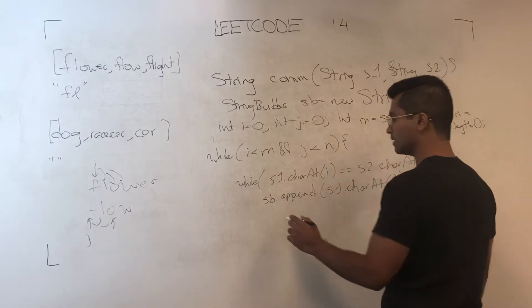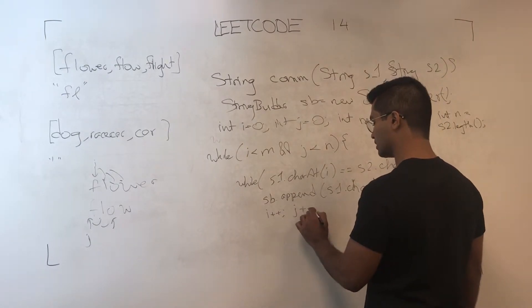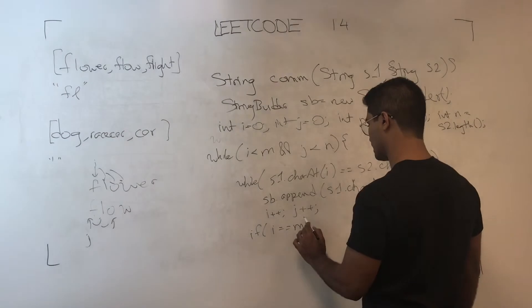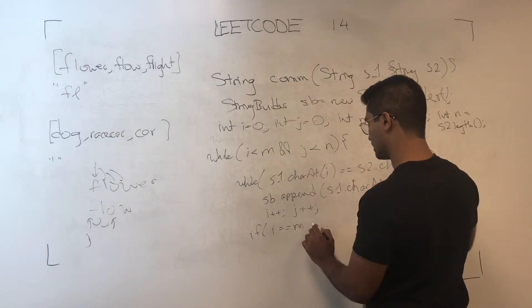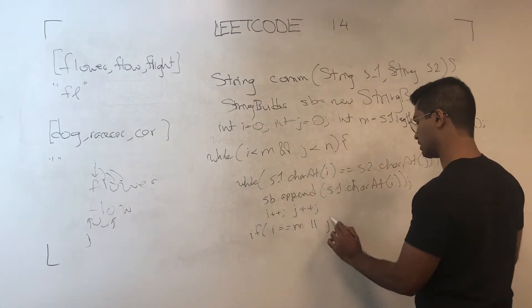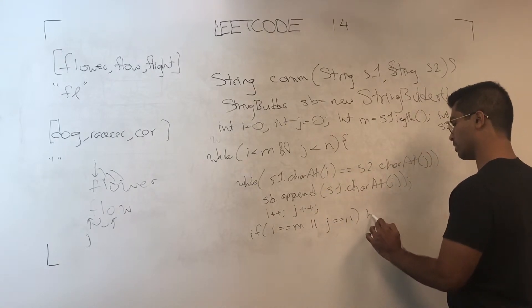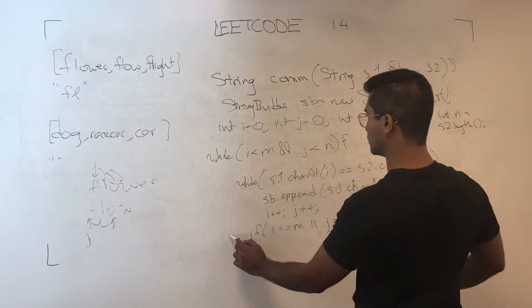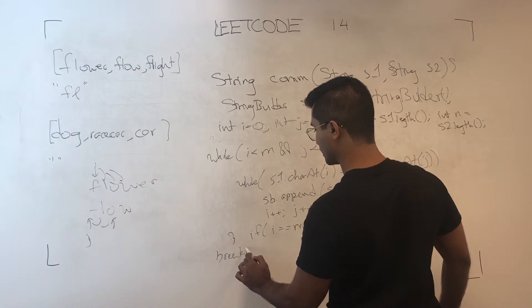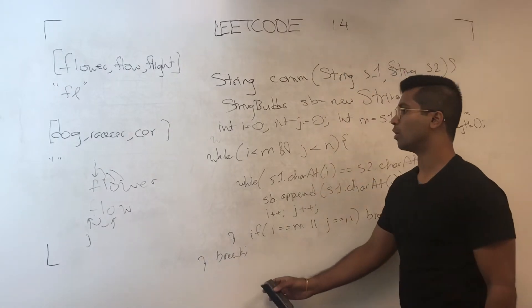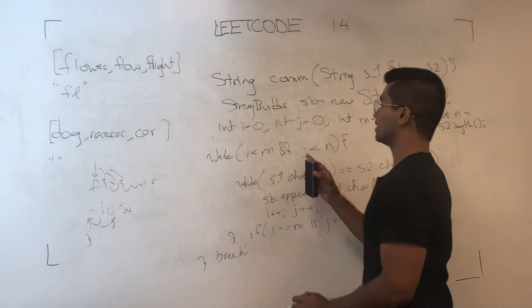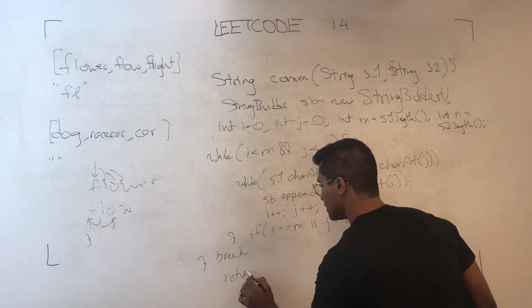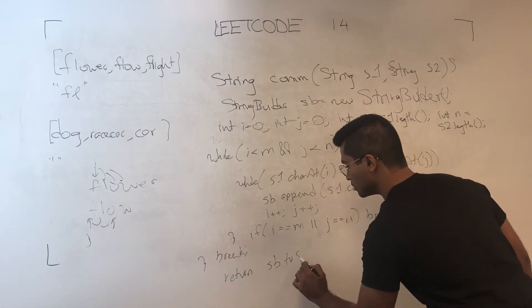Append s1.charAt at i, and then we increment i plus plus and j plus plus. If i is equal to m or j is equal to n, we break, we break this inner while loop, and then we'll also break the outer while loop because all we need is, for example, flow. At this point we have the prefix we need.